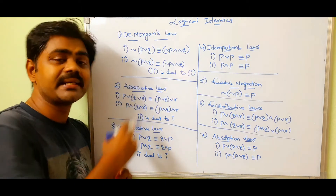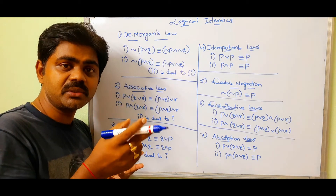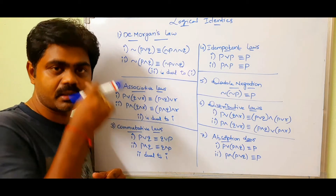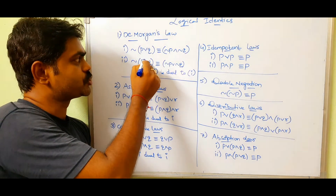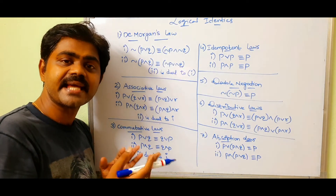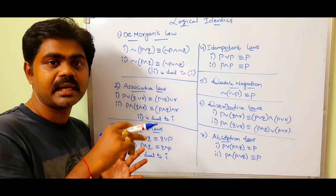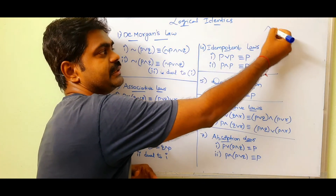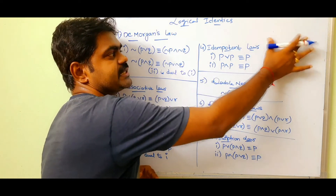So what is the duality principle? OR will be changed to AND, and if we have AND it will be changed to OR. So here we have OR — it will be changed to AND. And here we have AND — it will be changed to OR. So it is exactly like a mirror image: OR is changed to AND, and AND is changed to OR. This is duality.